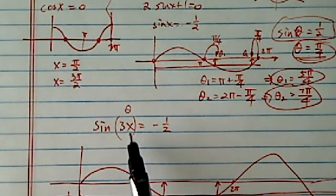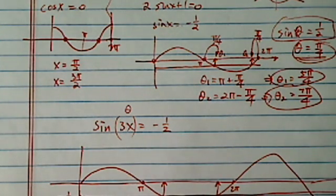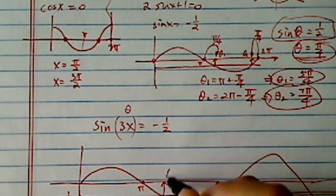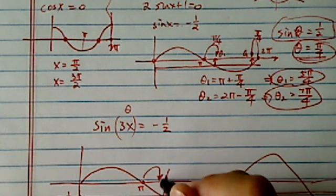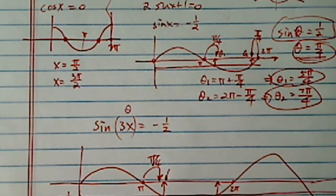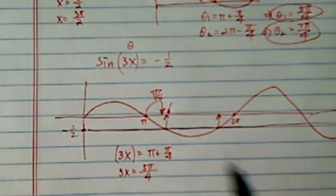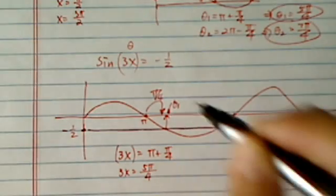However, because the 3x, let's draw the first quadrant here. You'll see why it's a little more complicated. I have 3x equal to this one. Well, earlier we found it's π/6 reference away, so it's π plus π/6. So 3x is equal to 7π/6 for one of them. That's the θ₁ here.